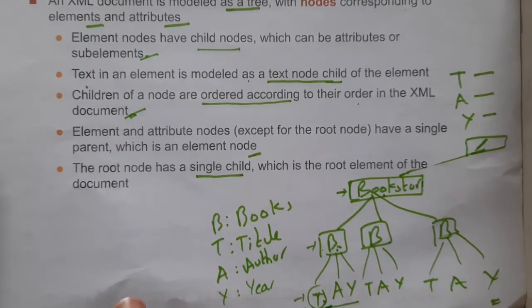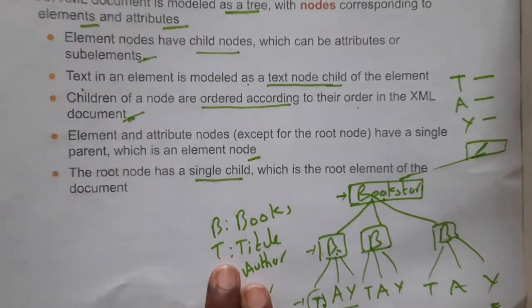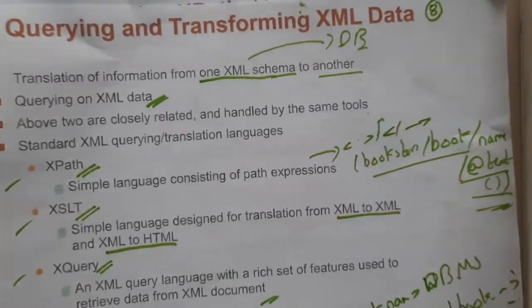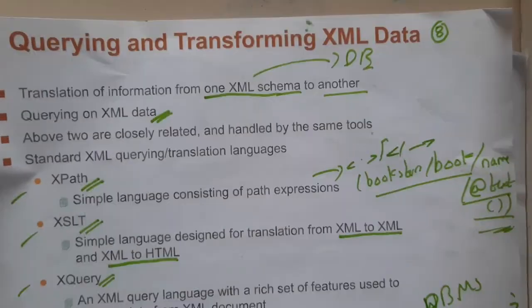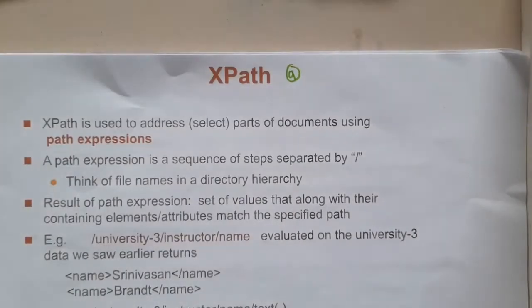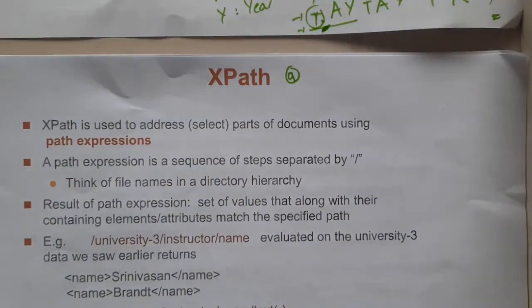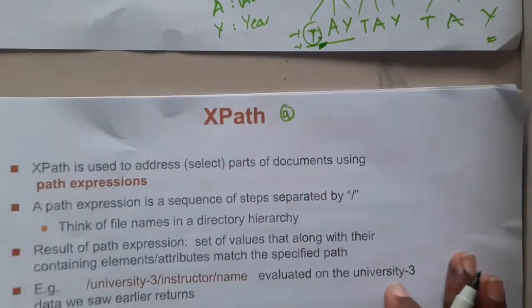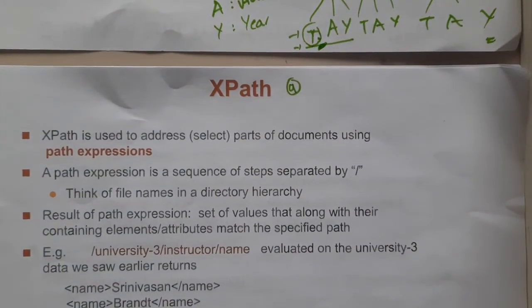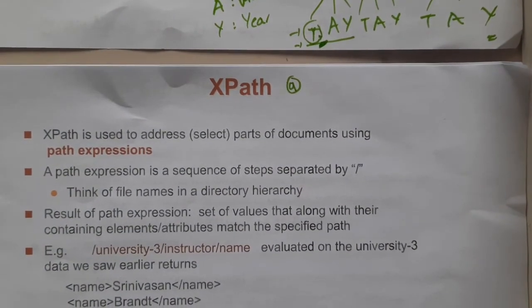The root node has a single child — the top-level element like 'bookstore'. I hope everyone got a basic idea about the XML tree and how querying and transformation work. In the next lecture we'll be discussing XPath in detail. Thank you for watching.